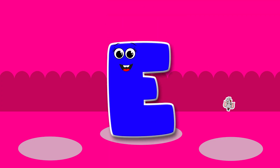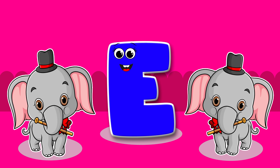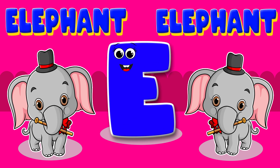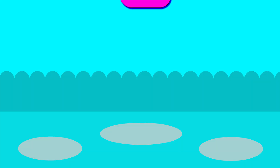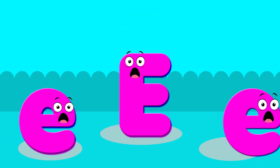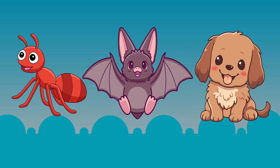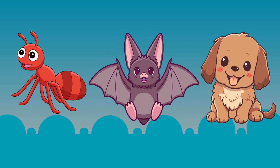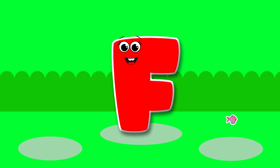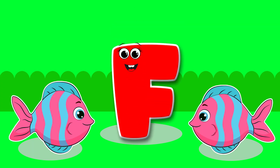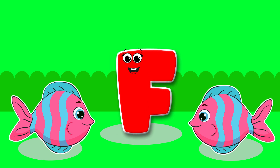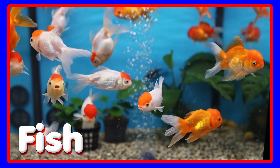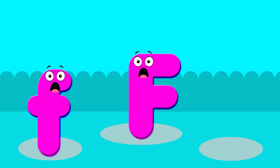E is for Elephant, e-e-elephant. E is for Elephant, e-e-e. F is for Fish, f-f-fish. F is for Fish, f-f-f.